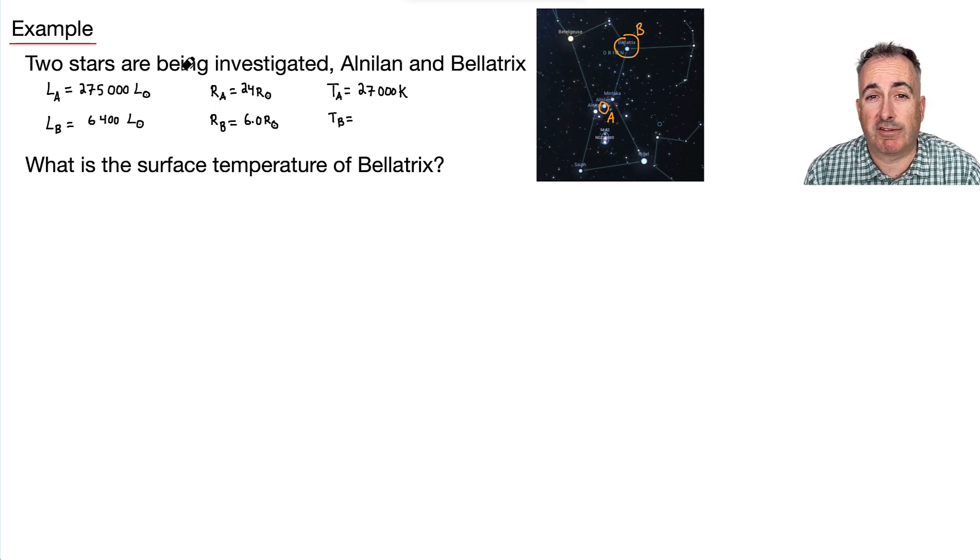So let's just say that it told us a bunch of facts about them. We know the luminosity of Alnilan is 275,000 times the luminosity of the sun. Remember, that's what this is. And this one is only 6,400, the luminosity of the sun.